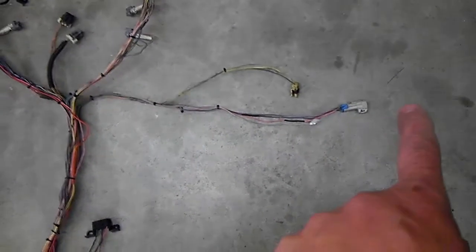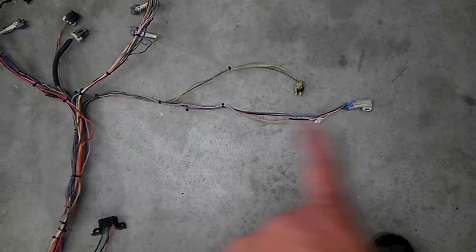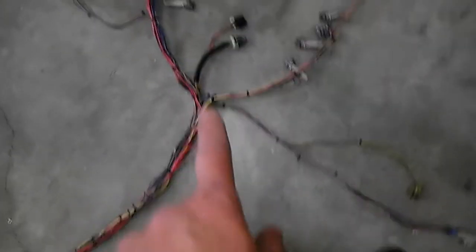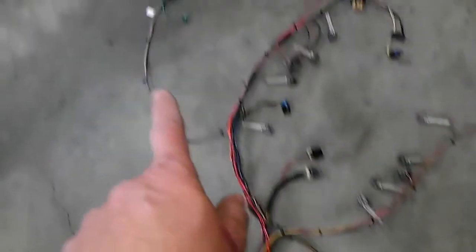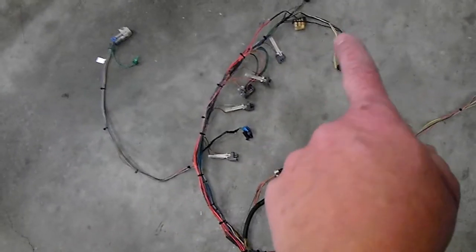So we have the passenger side O2 sensor connector. We have the crank position sensor, and we have the map and the cam position sensor. We have the driver's side O2 sensor, four injector connectors, coil.